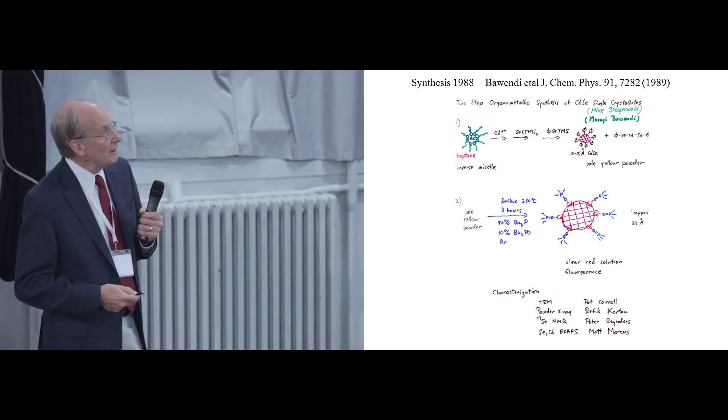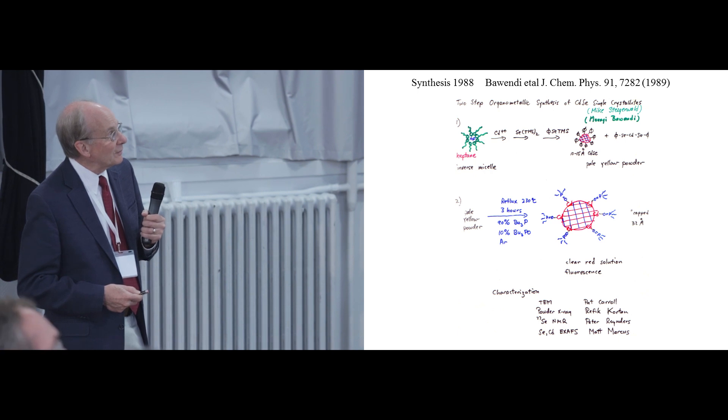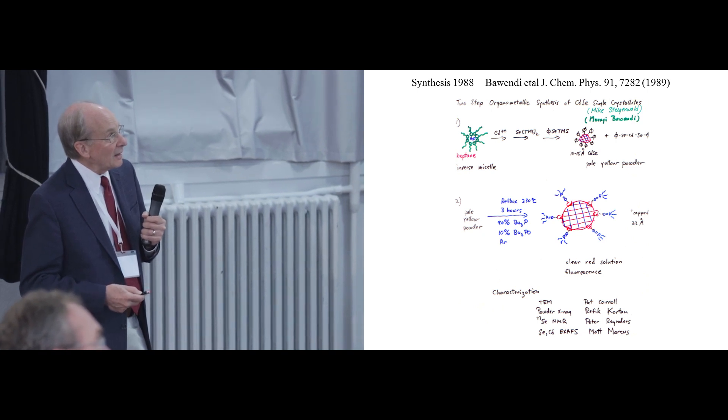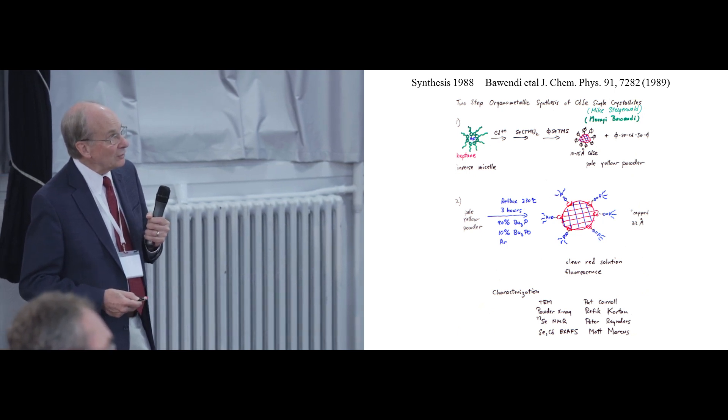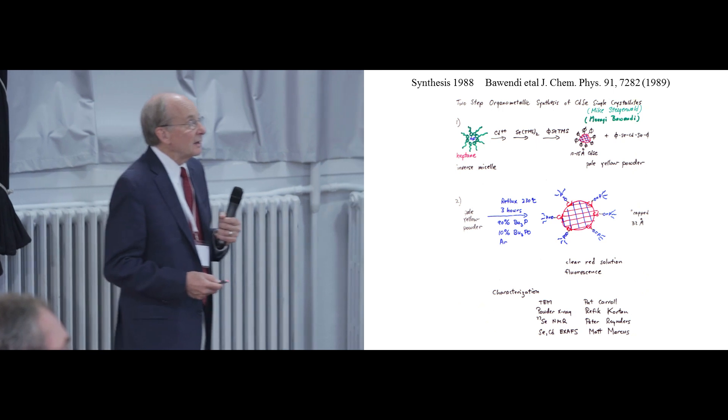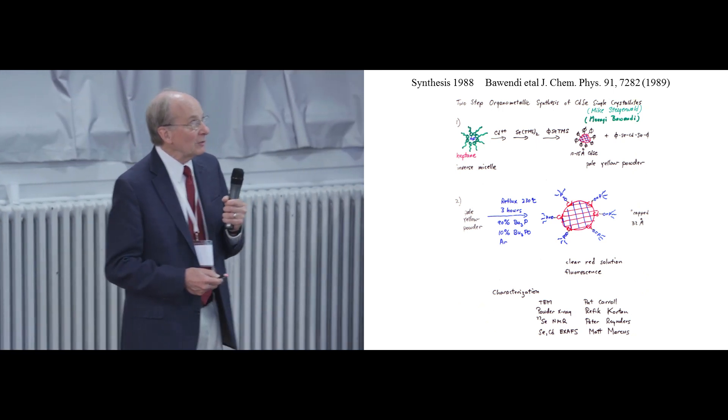So we began this process of starting with the pale yellow powder, which has a few nanocrystals in it, but has a lot of just sort of very small fragments of reagents like this and heating this up. You see, here's 230 centigrade for three hours. Make these beautiful red solutions. This shows our understanding of the surface chemistry at that time.